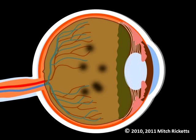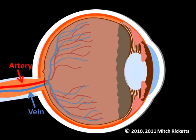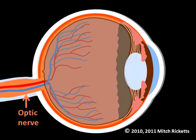Debris can accumulate in the vitreous humor and may be visible as distortions or ghostly shadows called floaters. The eye's blood supply enters and leaves from the rear. The optic nerve is also located in the rear of the eyeball. The optic nerve carries impulses from the eye to the brain, where those impulses are then interpreted as visual images.